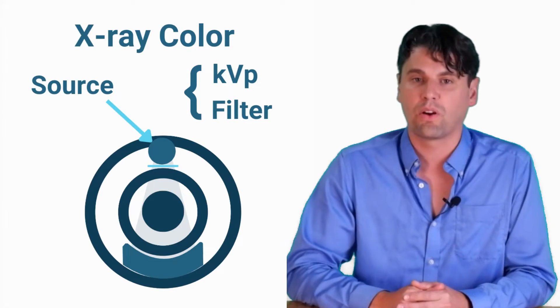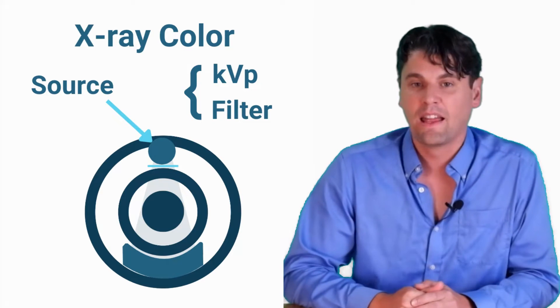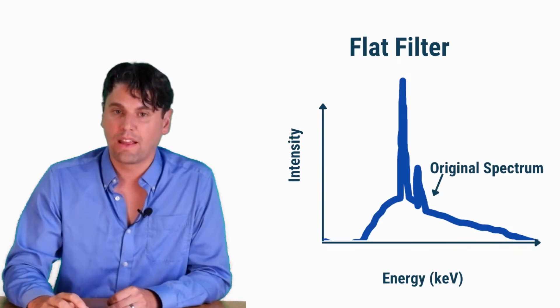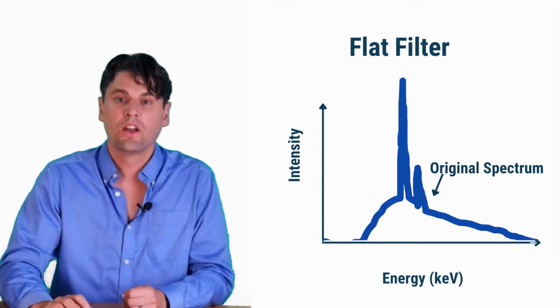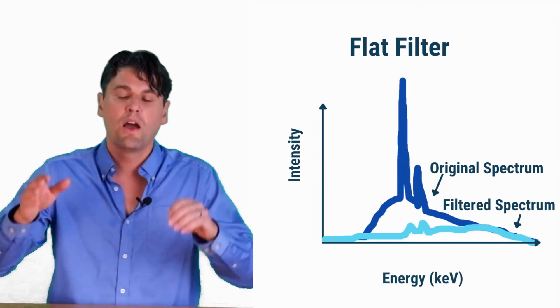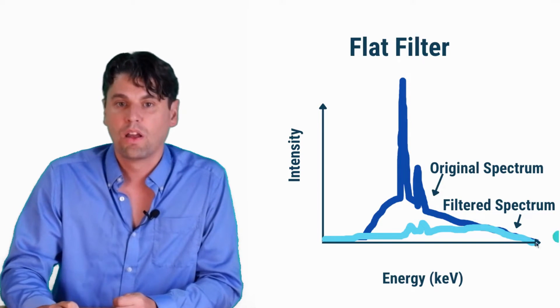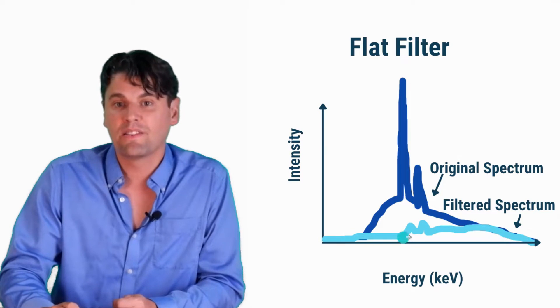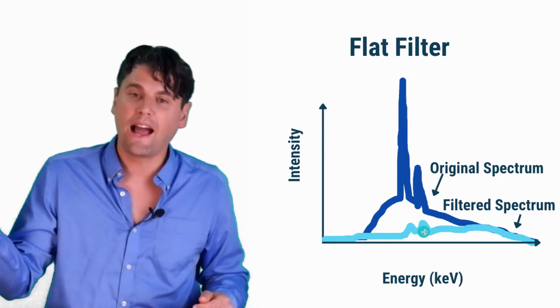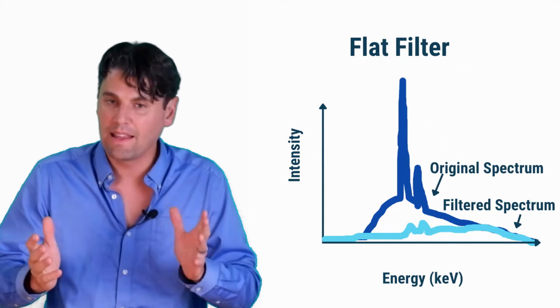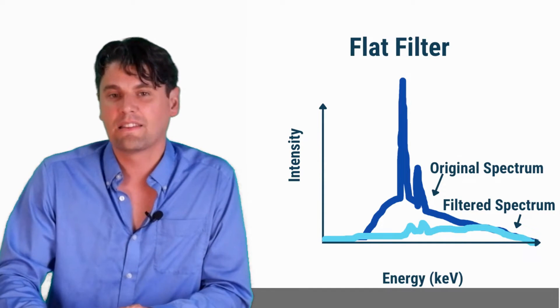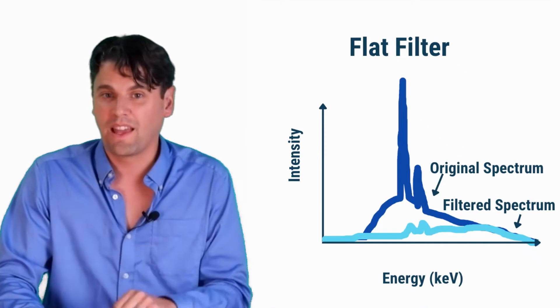The second way is by changing the filter placed after that x-ray tube. If you start with a beam and then put something in there such as a tin filter, you're going to preferentially stop the lower energy x-rays more, so you get many fewer x-rays through but the average energy of your x-ray spectrum moves to a higher energy. You can also combine these two ways — either changing the KVP or using a filter.